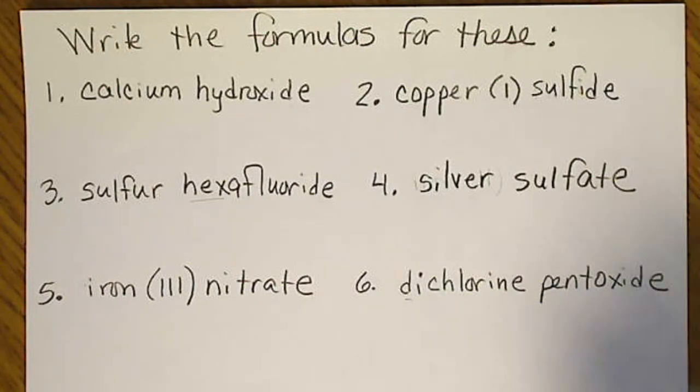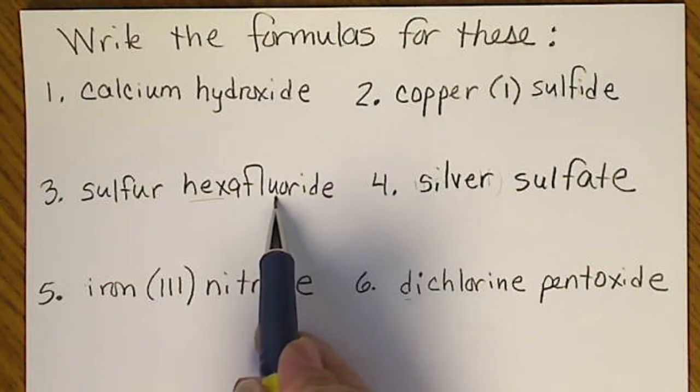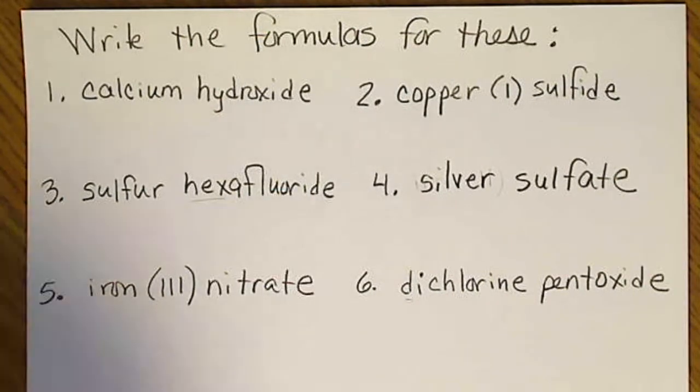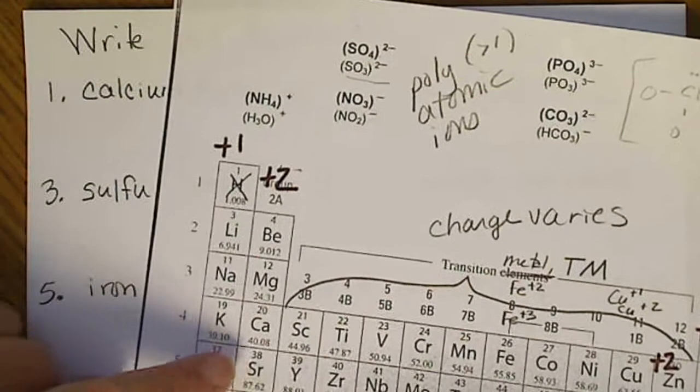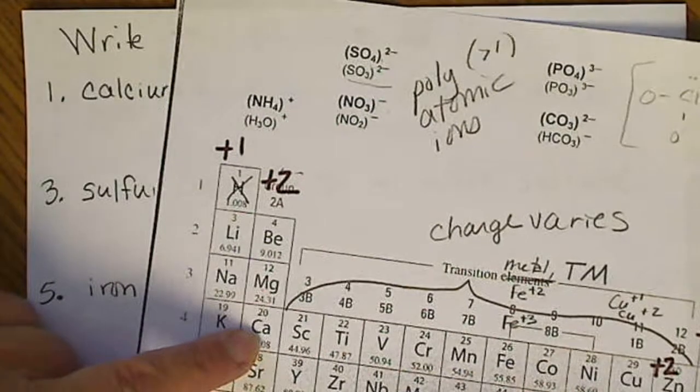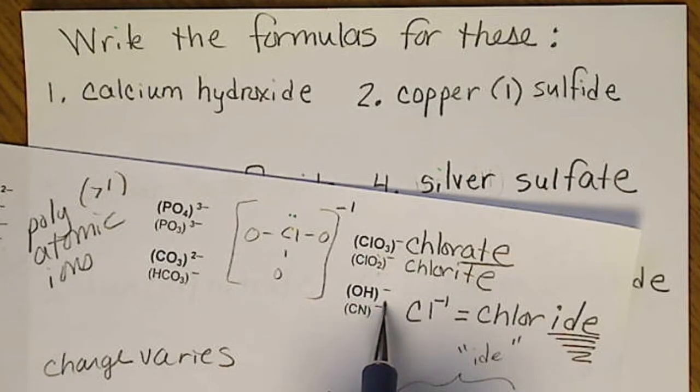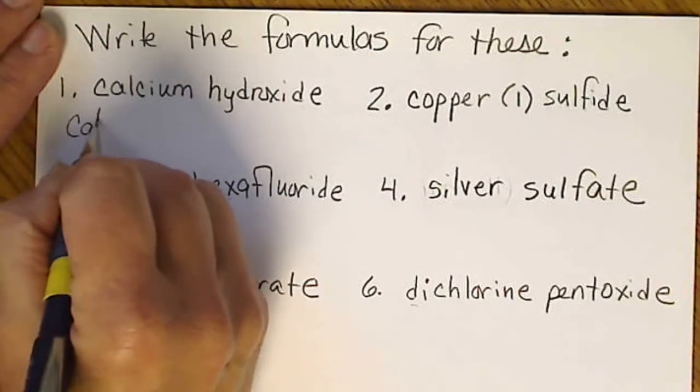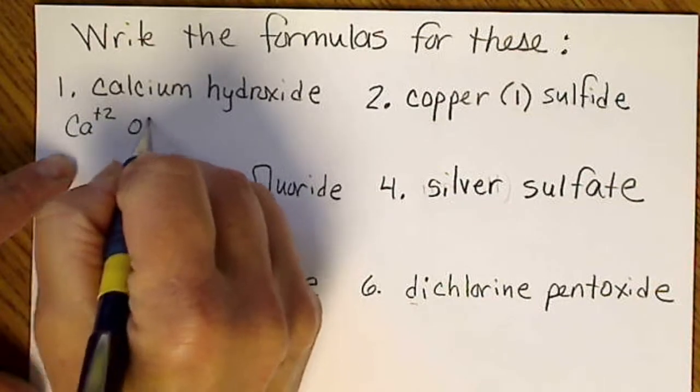If we see Greek prefixes, then all we have to do is know how many atoms, for example of fluoride, we would need for that prefix. If we look at calcium hydroxide, we find calcium on the periodic table. Calcium is a +2, hydroxide is OH with a -1.